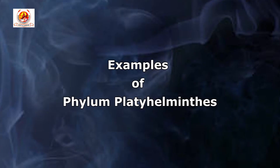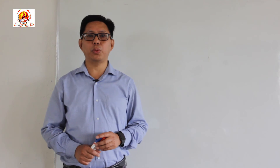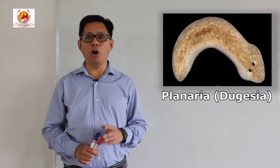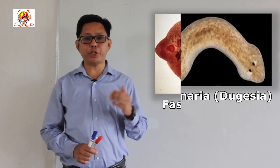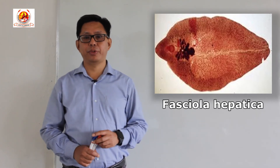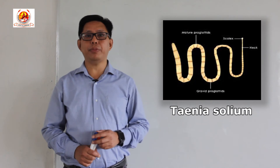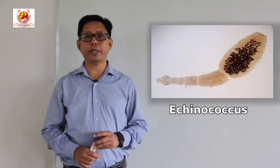Fertilization may be internal. So these are some of the generalized characters of phylum Platyhelminthes. Coming to the examples: we have Planaria or Dugesia, which is a free-living form. Another important example is Fasciola hepatica, the liver fluke, which is found in sheep. Another example is Taenia solium, the pork tapeworm, and Echinococcus, the dog tapeworm.